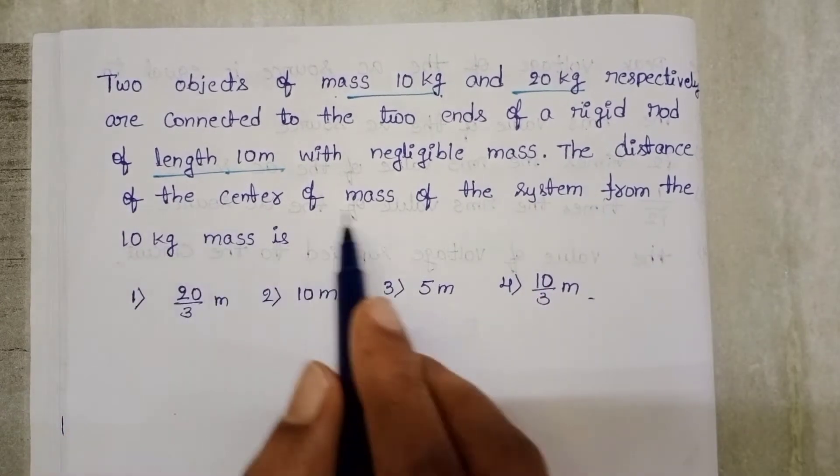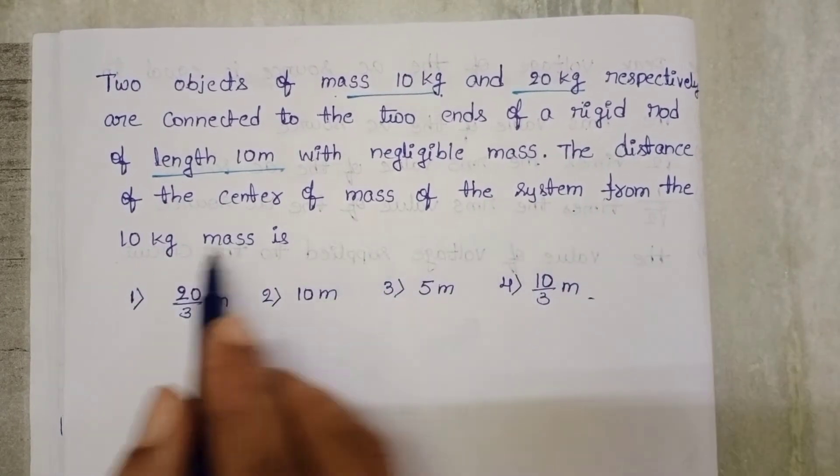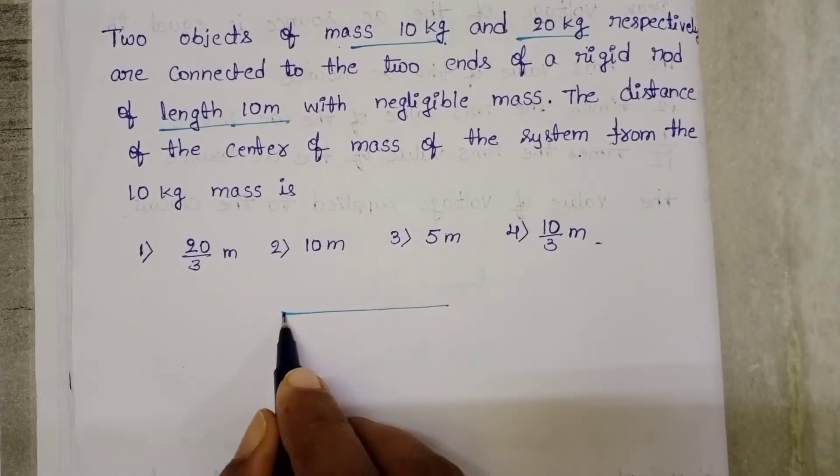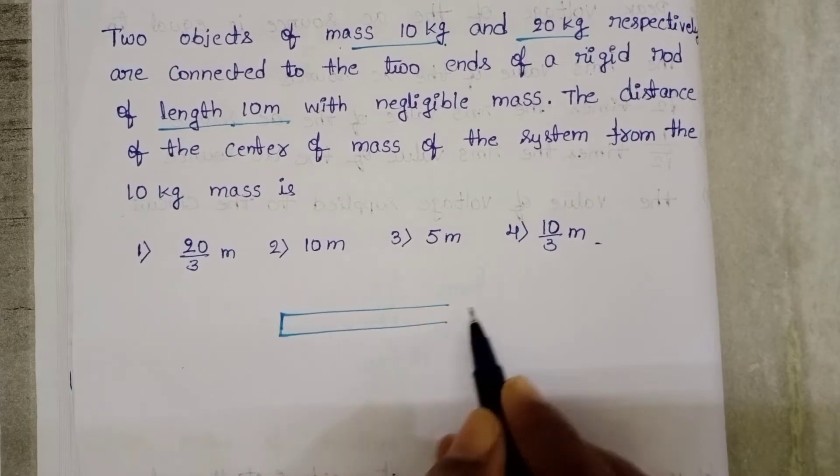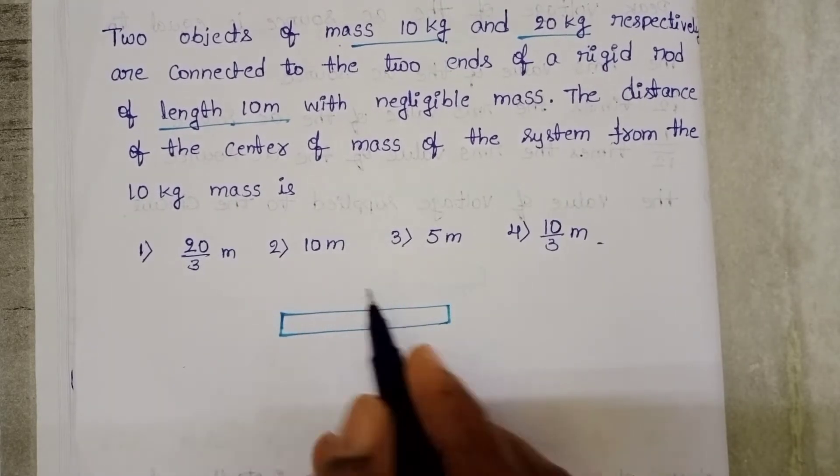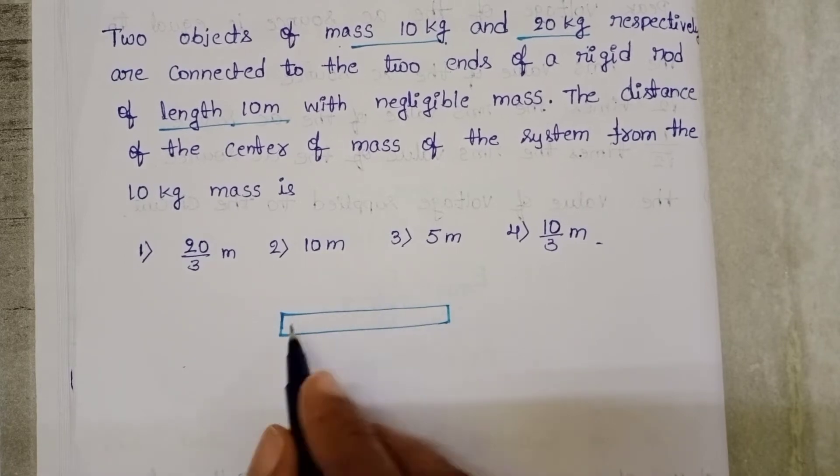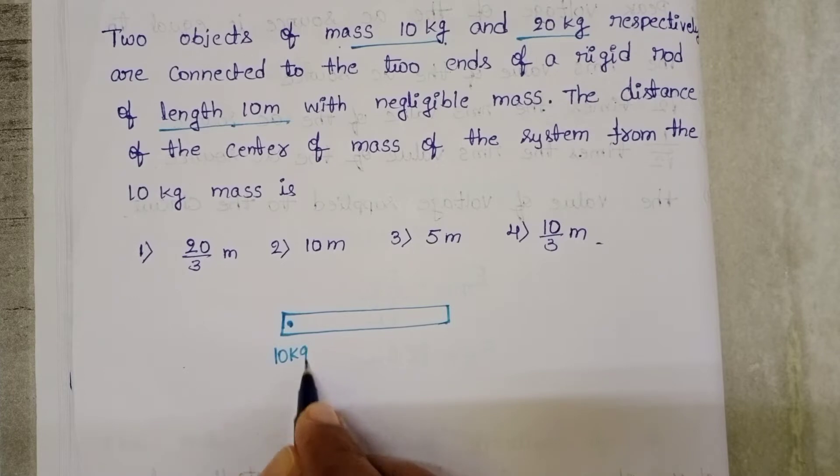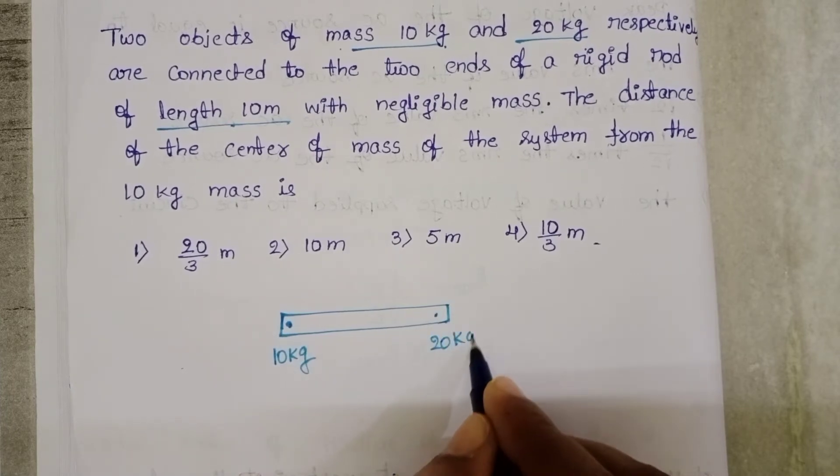The distance of the center of mass of the system from the 10 kg mass needs to be found. The rod is 10 meters long with negligible mass. On each side, two different masses are connected: one side 10 kg mass and another side 20 kg mass.